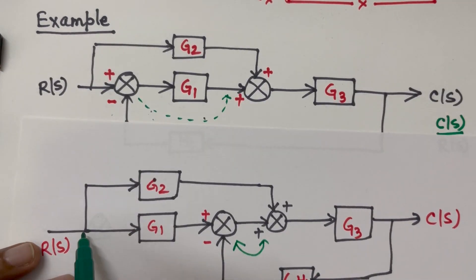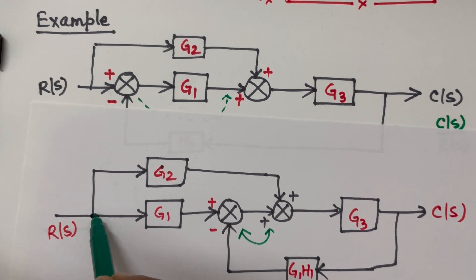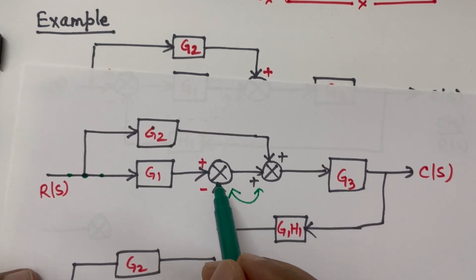If there are takeoff points next to each other they are same. There is no difference in takeoff point being here or there. But there is big difference between summing points next to each other.